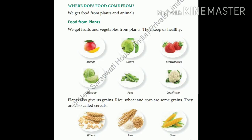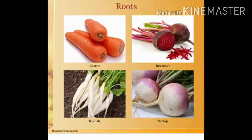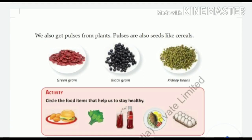All these things we get from plants keep us healthy. Some parts of plants that we eat include roots — for example carrot, beetroot and radish. We also get pulses from plants. Pulses are seeds, like cereals. We eat these seeds: green peas, black gram, kidney beans. Rice and wheat are also seeds we eat.